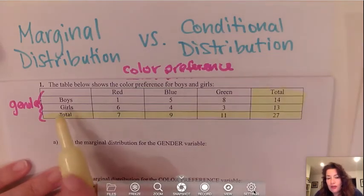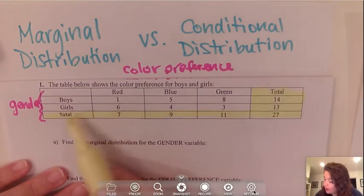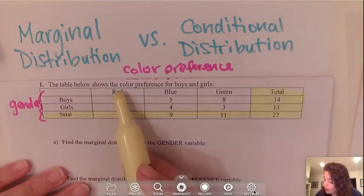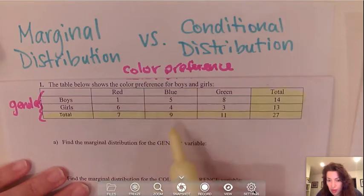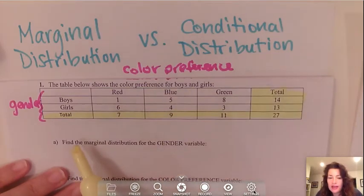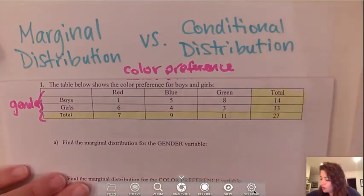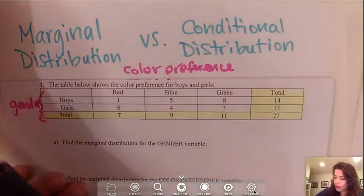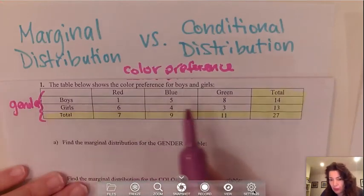So if you notice what I have are counts here — red, blue, green — and the counts are labeled below. Now it's asking us to find the marginal distribution for the gender variable. If we want to find the marginal distribution for gender, I'm going to look at the rows.